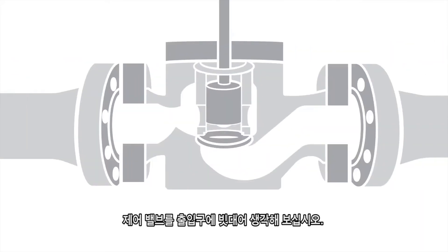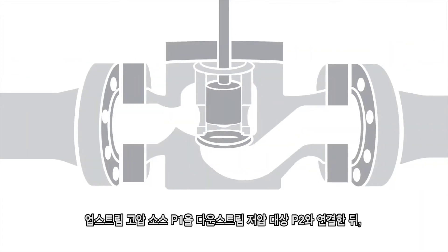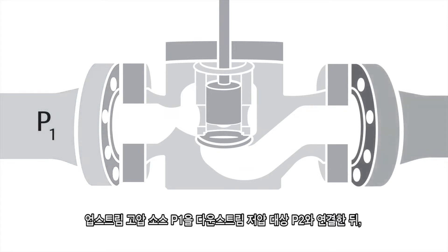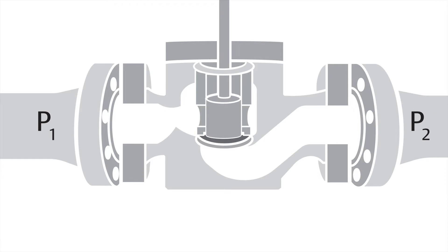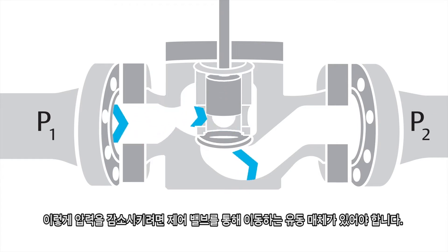Think of a control valve as a doorway. It connects an upstream, higher pressure source, P1, to a downstream, lower pressure destination, P2. And just like a door, it can open and close and have different positions in between. In order for this pressure reduction to occur, there has to be a flowing medium that travels through the control valve.